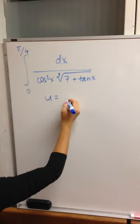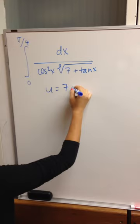So the u for this problem is what's inside the square root, so that's the cube root, which is 7 plus tan x.